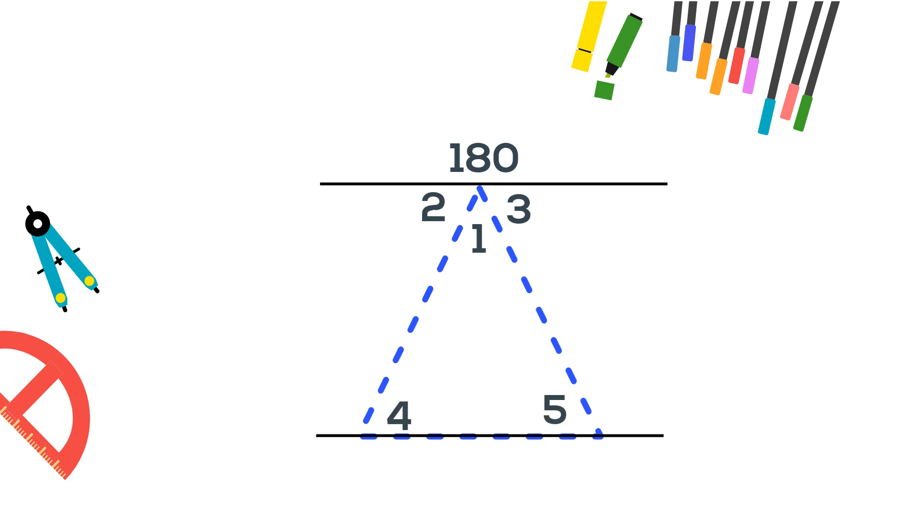Next we know that the triangle can act as a transversal and it creates angles. Angles 2 and 5 are alternate interior angles, therefore they are equal. Angles 3 and 4 are alternate interior angles and they also are equal.